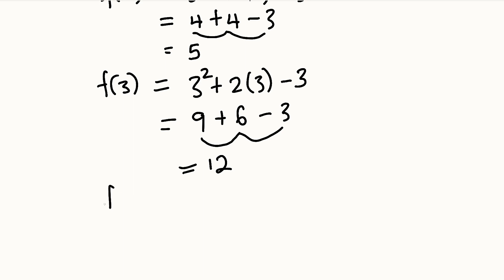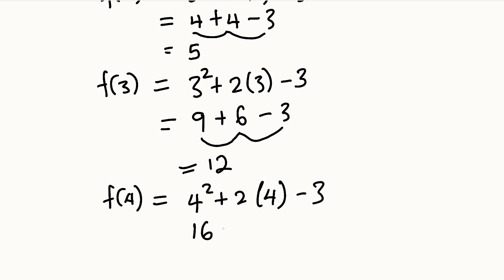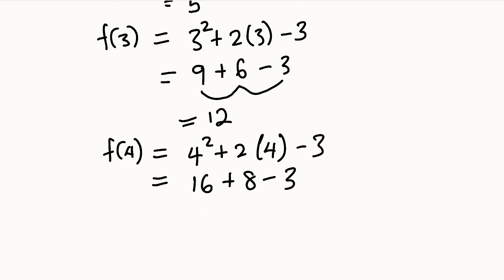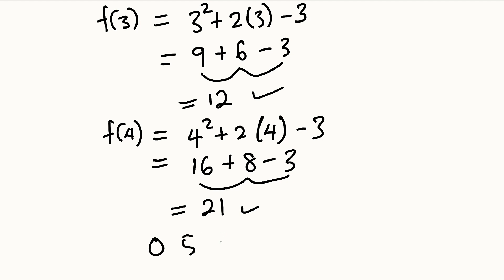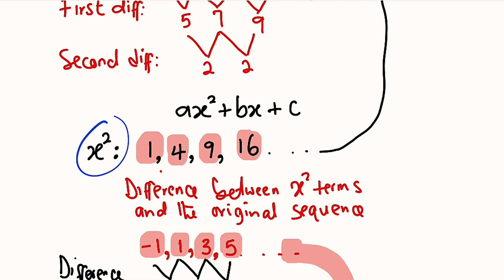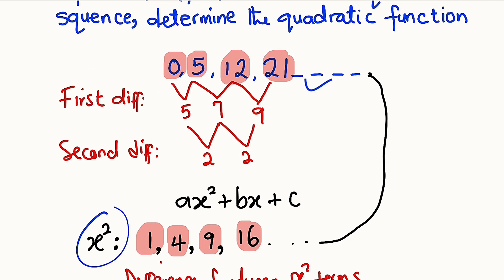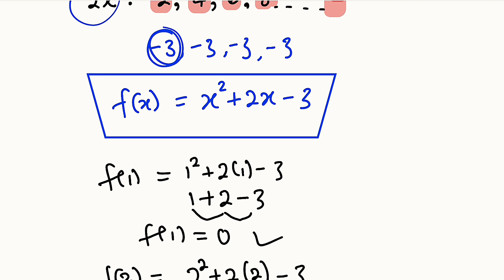For f(4): 4² + 2(4) − 3 = 16 + 8 − 3 = 21. So f(4) = 21. Bringing all values together we have 0, 5, 12, and 21, which is exactly equal to our original sequence 0, 5, 12, and 21. Therefore, f(x) = x² + 2x − 3 is the quadratic function used to form that sequence.